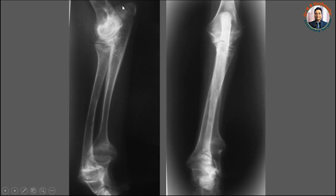You could see here, there is a radiolucent line which indicates that this is a young animal. This one is the proximal extremity of the radius. This one is the diaphysis of the radius and this one is the diaphysis of the ulna. Here in the dog, this one is the styloid process. This is the epiphysis and this one is the metaphysis. Here this one is the metaphysis and this one is the epiphysis.